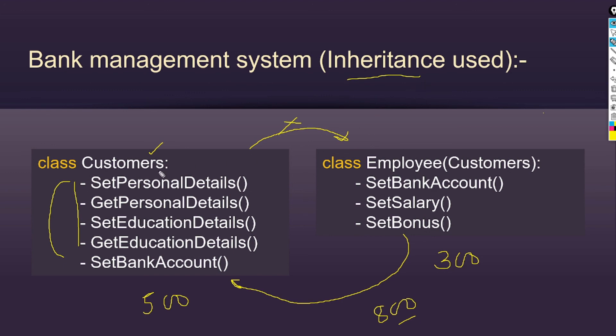Less code means better performance, easier testing and debugging, and easier maintenance — many benefits come from writing less code. Also, customers and employees have a relation and share common methods, which is another reason we use inheritance. In the next video, we will talk about how to use constructors in inheritance.